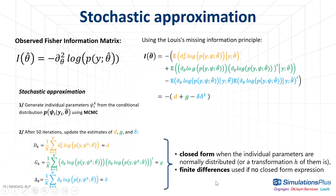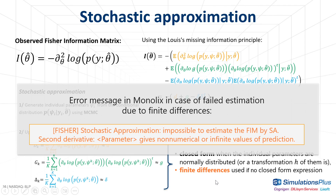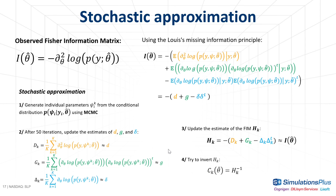The finite differences imply calculating the model predictions for the estimated expected parameter values, but also values slightly larger and slightly smaller. In rare cases, this might produce numerical errors because of extreme values. The calculation then stops with an error message. This means that your model prediction is very sensitive to some parameter values, maybe due to some mistake in your structural model. After computing d_k, j_k, and delta_k, these variables are used to update the estimate h_k of the Fisher information matrix.